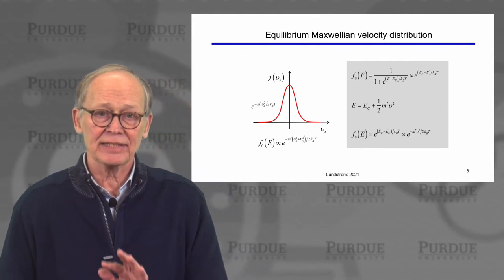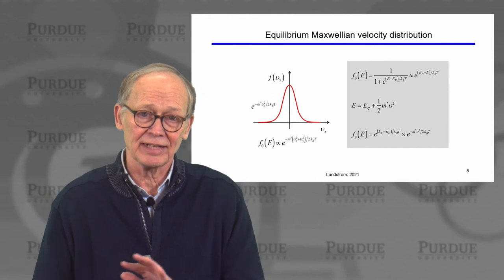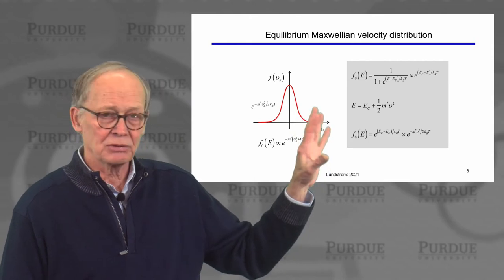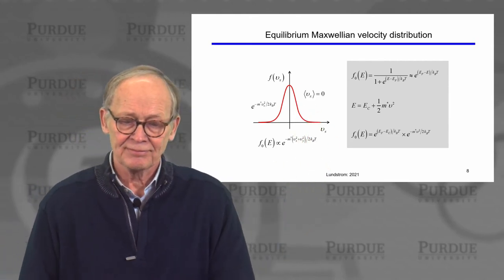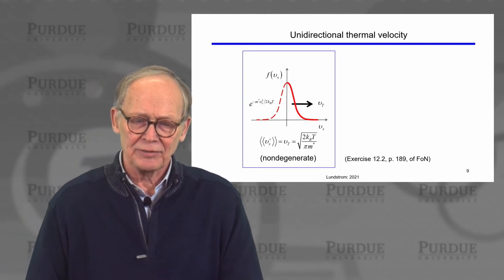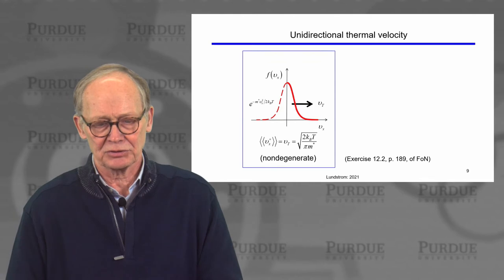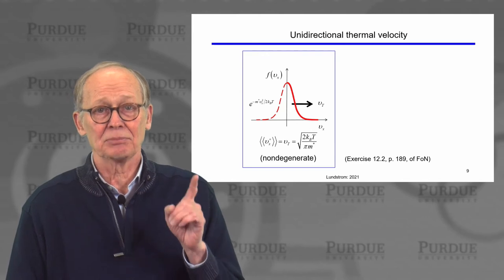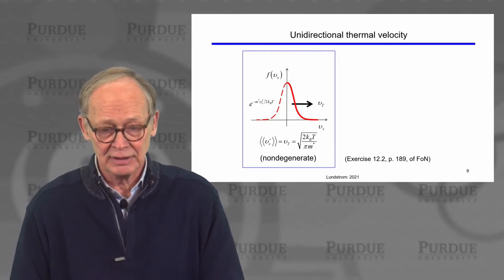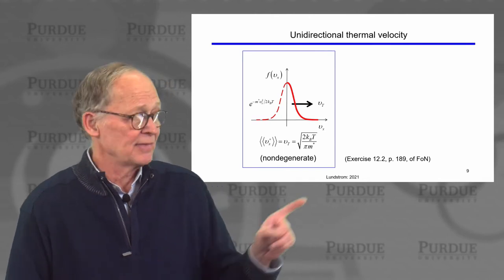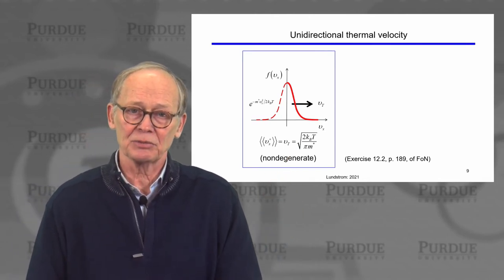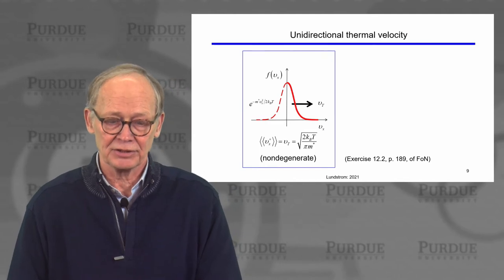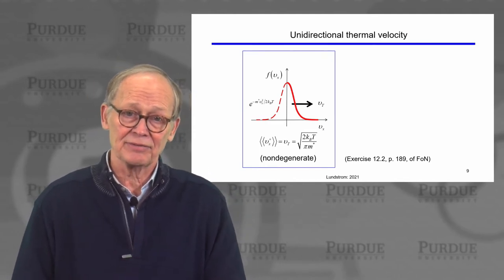The overall average velocity is zero because we're in equilibrium, so electrons are not flowing anywhere on average — we have a symmetrical shape about v equals zero. If we just look at the positive half of that symmetrical shape and ask what is the average x-directed velocity of electrons that have a velocity in the positive x direction, we can compute that average. That's what we mean by the unidirectional thermal velocity, given by a fairly simple expression under non-degenerate conditions.